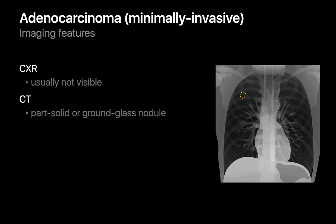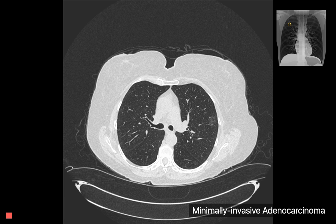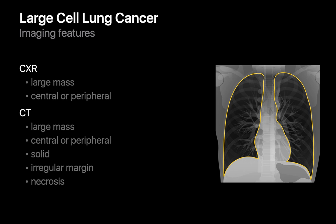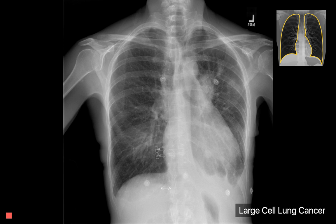Minimally invasive adenocarcinomas usually present as sub-solid lung nodules on chest CT. Since the nodules are sub-solid, they often may be invisible on chest radiography, and sometimes on chest CT they may be quite faint. Large cell lung cancers grow quickly and are often undetected until they've already metastasized. Most often they present as a lung mass at diagnosis and may be either central or peripheral in location. Due to their rapid growth, large cell carcinomas may also cavitate centrally like squamous cell carcinomas.